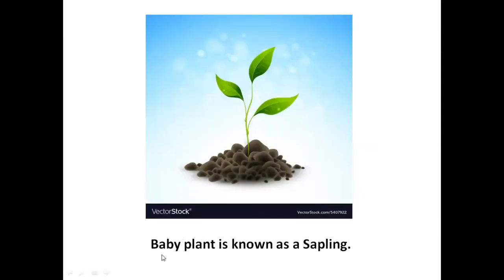Baby plant is known as a sapling. So children, when we plant a seed and when it starts growing, that baby plant is called a sapling. Repeat after me.